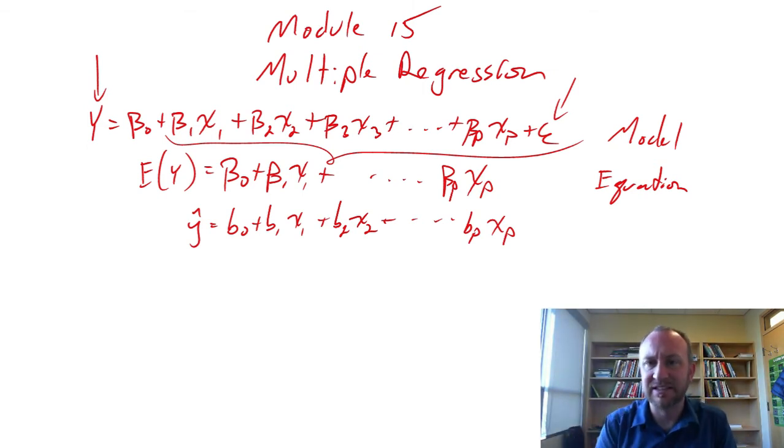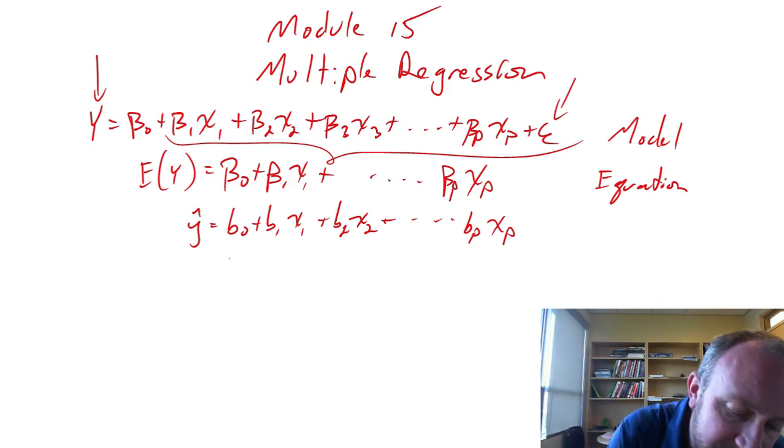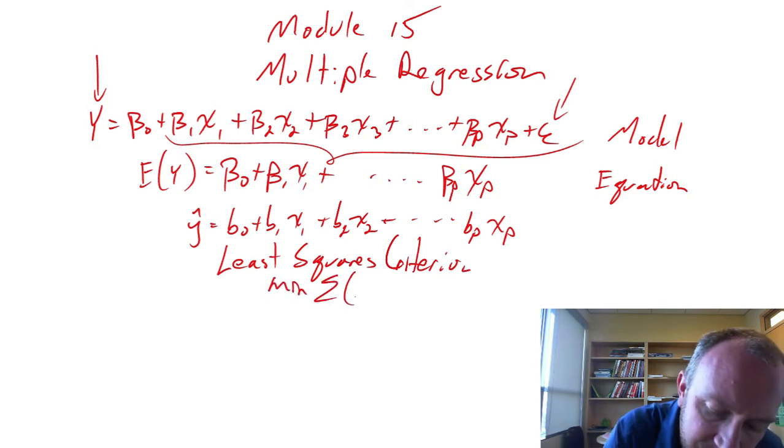So again it's very similar with module 14 but now we're just elaborating it. We're expanding it to allow for other independent variables. The process, the methodology is the same. We are still employing this, what is called the least squares criterion. And so this is where we are minimizing the sum of squared errors, our squared errors in that regression.